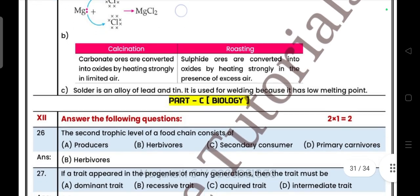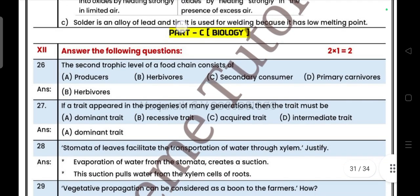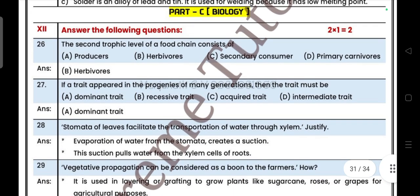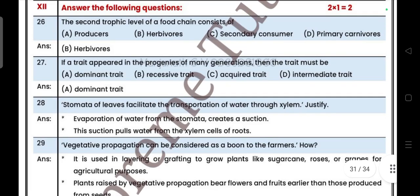Next, Part C Biology. Two multiple choice questions. The second trophic level of a food chain consists of: answer is herbivores. Question number 27: If a trait appeared in the progenies of many generations, then the trait must be dominant trait.